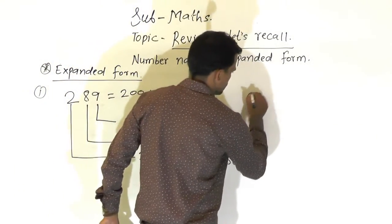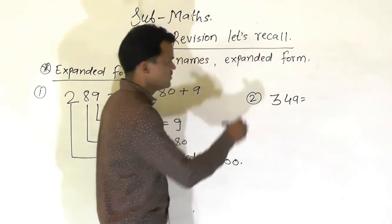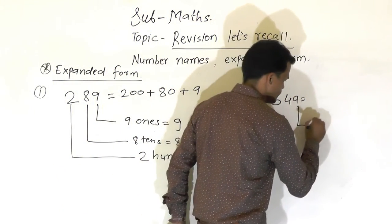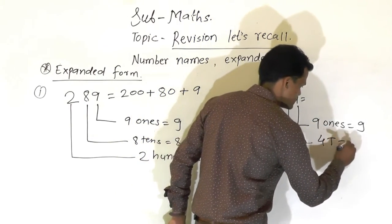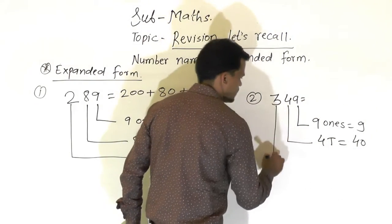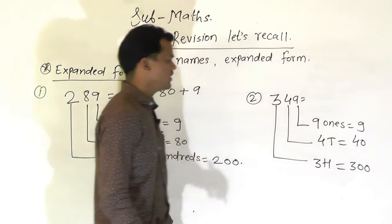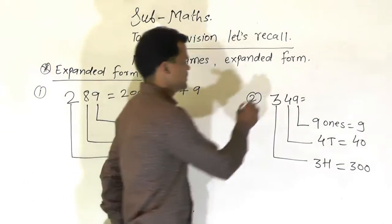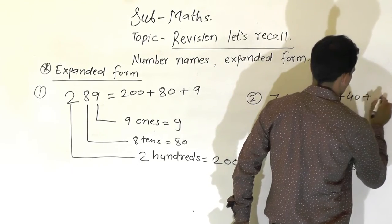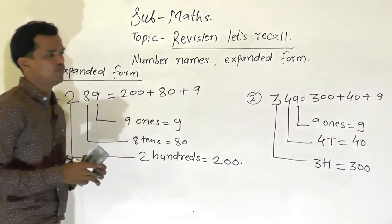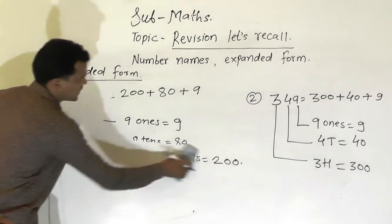One more example: 349. In this number, 9 comes at the ones place, so 9 ones is equal to 9. 4 comes at the tens place, so 4 tens is equal to 40. And 3 comes at the hundreds place, so 3 hundreds is equal to 300. So what will the expanded form of this number be? 300 plus 40 plus 9. This is a very simple concept — first we have to know the place value of each digit, then we can write any number in expanded form.